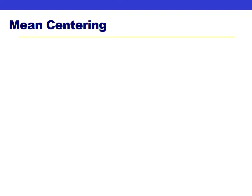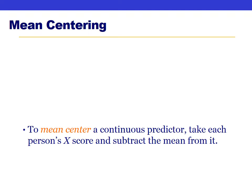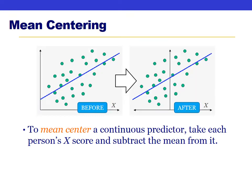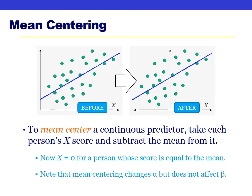The second thing we need to cover is mean centering, which can make alpha more informative. To mean center a continuous predictor, we take each person's X score and subtract the mean from it. What this does is shift the graph so the slope doesn't change but the Y-intercept — alpha — does change.